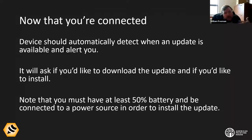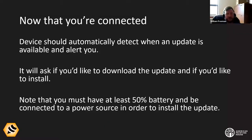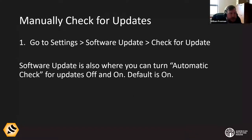Once you're connected, the device should automatically detect when an update is available and alert you. It'll ask 'would you like to download the update?' — say yes. Once downloaded, it'll ask 'would you like to install the update?' — say yes. The key requirement: you must have at least 50% battery and be connected to a power source in order to install the update. If you prefer to check manually, go to settings, then software update, then 'check for update.'